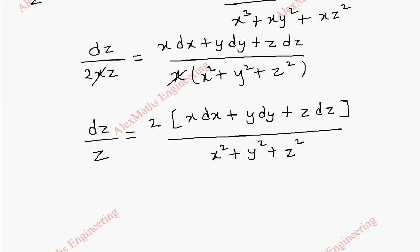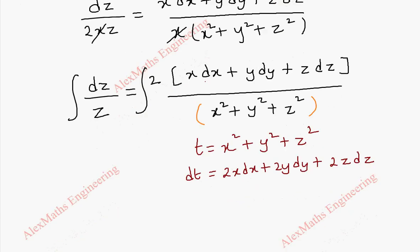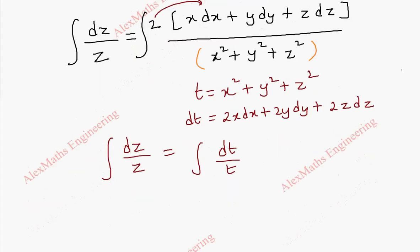Now we shall take integration on both sides. Here the denominator term, if I take let t equal to x squared plus y squared plus z squared, then its differentiation dt is 2x dx plus 2y dy plus 2z dz. So the entire term after multiplying the two inside we have it in the numerator. So it is integral dt by t, and here it is integral dz by z.